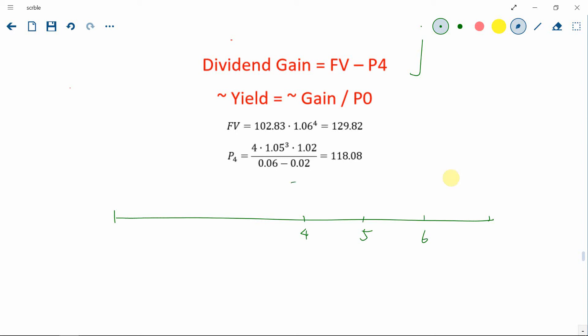So the future value at time four is just the present value of P0 accumulated for four years. And the price we have computed from before is just 102.83 at the beginning. And accumulation for four years is just multiplying by the interest rate to the power of four. So that's just the future value. It's a simple one.